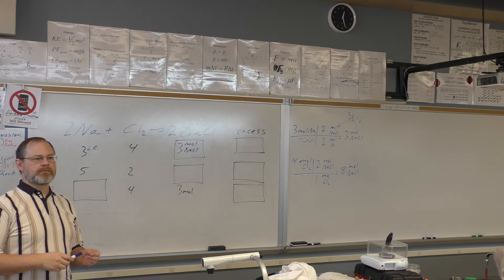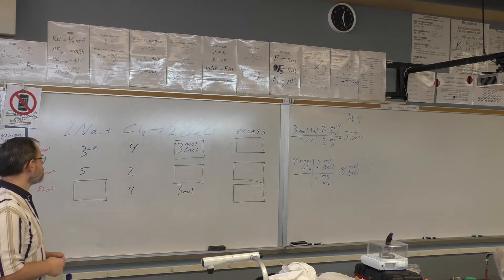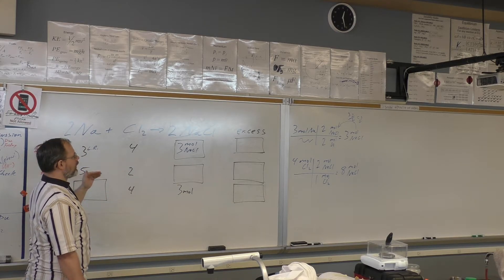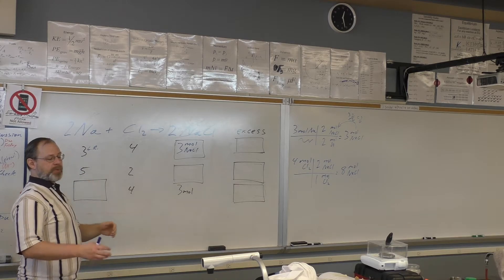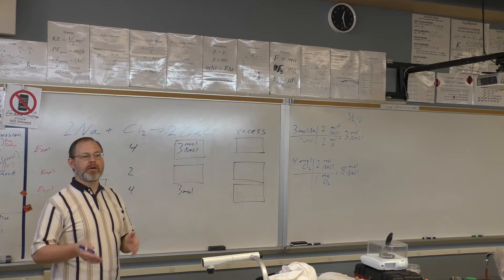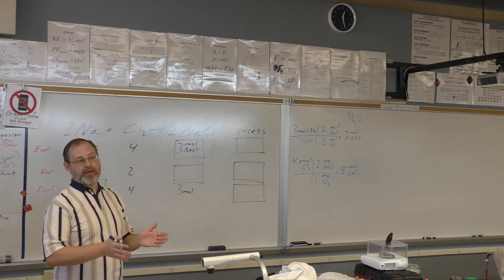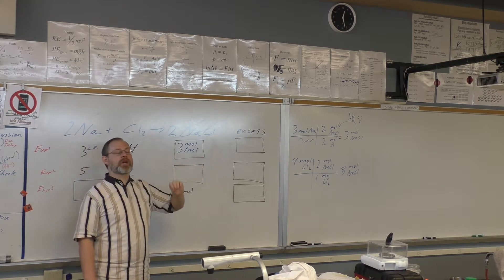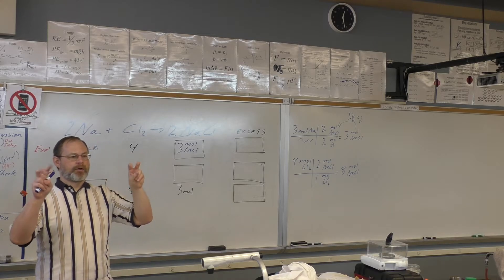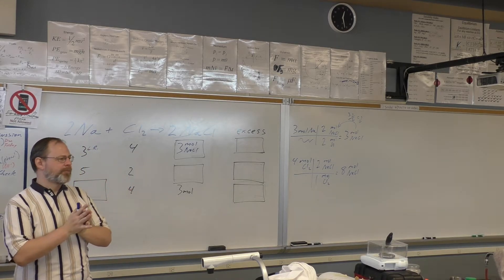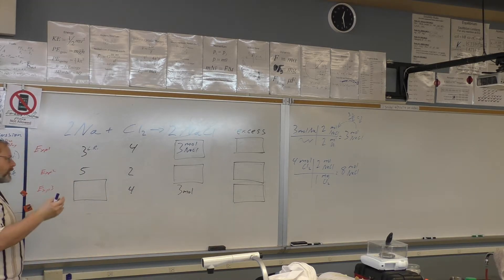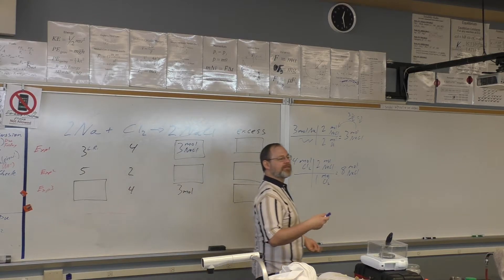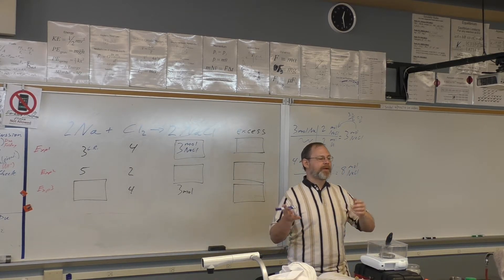Student question: how do you know what to write in the boxes of the T-chart? It depends on the exercise. This specific exercise wants to know how much product we can make based on our reactants, so we take reactant number one and go to product, then take reactant number two and go to product. Whichever one makes less, that's the correct one — that's the limiting reactant. Now we need to figure out how much excess is left, so we need to figure out how much chlorine was used.